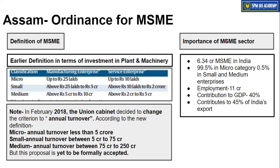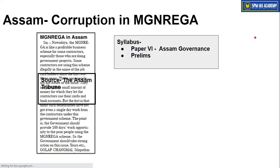Regarding the importance of the MSME sector: 6.34 crore MSMEs are operational in India. These MSMEs generate about 11 crore jobs. Out of all MSMEs, 99.5% are in the micro category, while only 0.5% are in the small and medium category. Overall, the MSME sector contributes about 40% to India's GDP and about 45% to India's exports — showing how significant a role the MSME sector plays in the Indian economy.